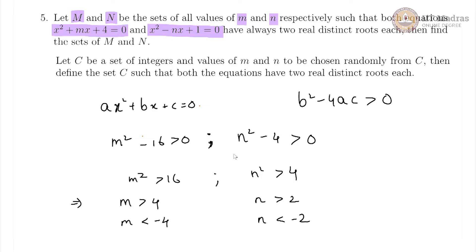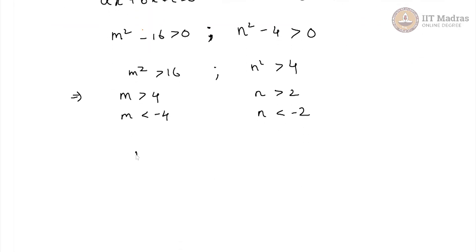So these are all the possible values for which you will have two real distinct roots for these equations. So your set M would be the union of two intervals. One is from -∞ to -4 open interval union with 4 to ∞ and set N is similarly -∞ to -2 union with 2 to ∞.